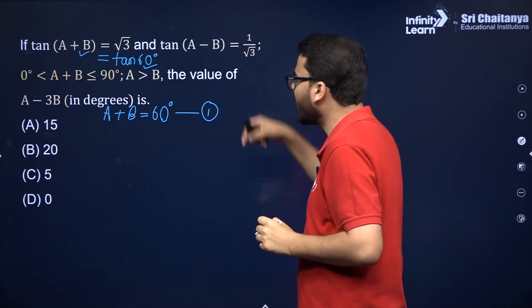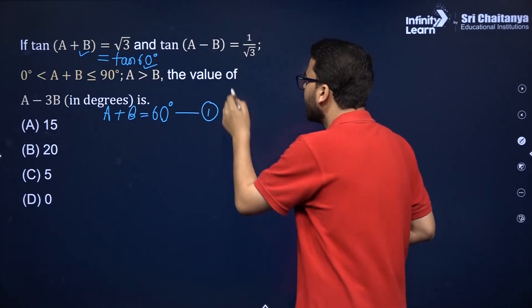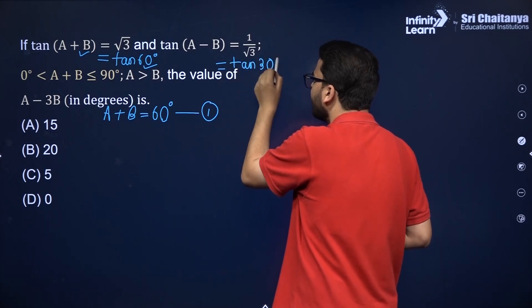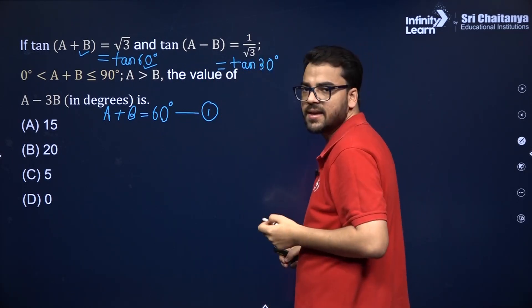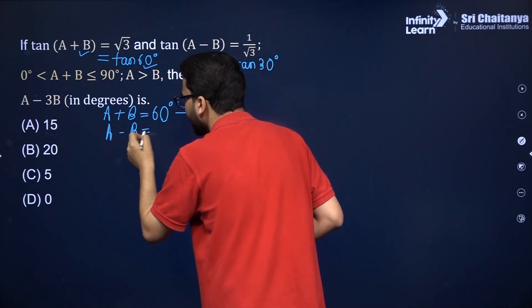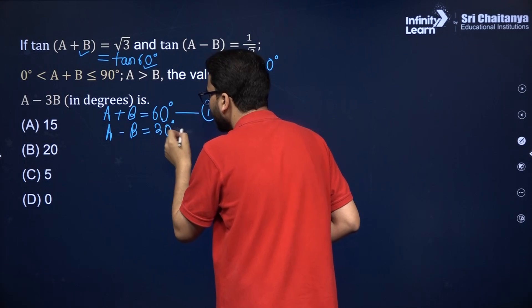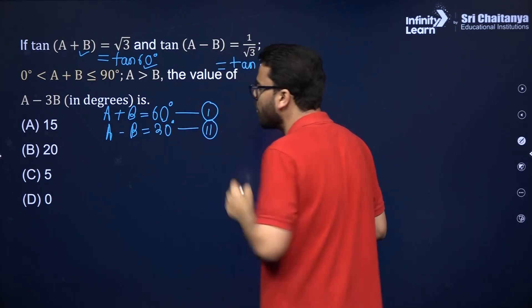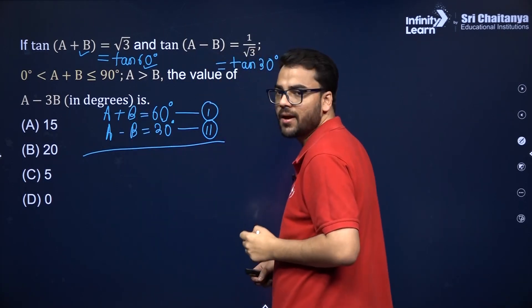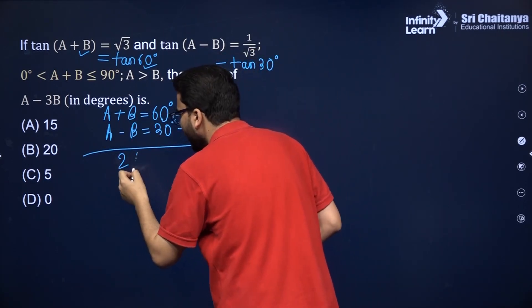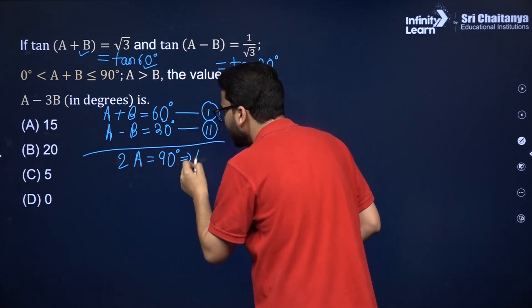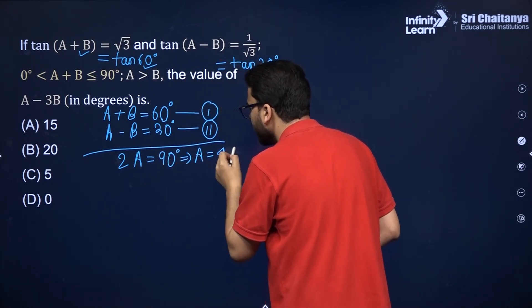Now tan(A-B) = 1/√3. Since tan 30° = 1/√3, we get A - B = 30 degrees. Adding both equations, B is eliminated and 2A = 90 degrees.